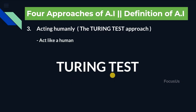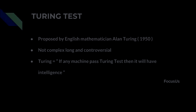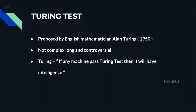Moving to the third point, we have acting humanly, which is also called the Turing test approach. Here, our machine should act like a human. So when do we know our machine acts like a human? That's what the Turing test addresses. The Turing test was proposed by English mathematician Alan Turing in 1950. Instead of giving a long, complex, and controversial definition of AI, he basically said that if any machine passes the Turing test then it will have intelligence.